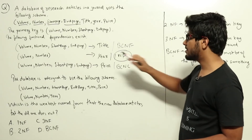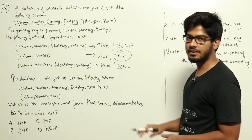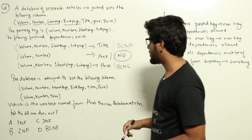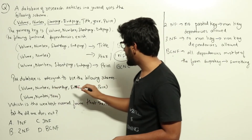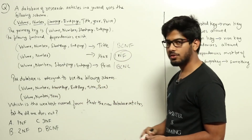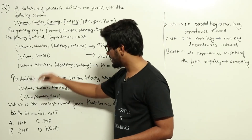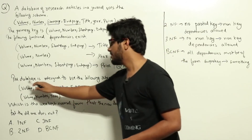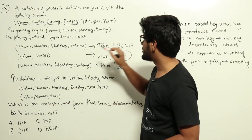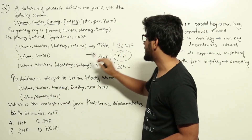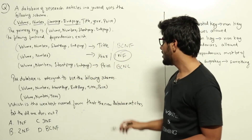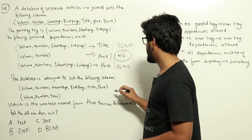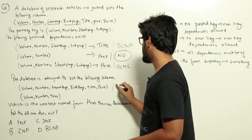Now for the redesigned database: the first table is Volume, Number, Start Page, End Page, Title, Price. The primary key Volume, Number, Start Page, End Page is present in this table. The functional dependencies Volume, Number, Start Page, End Page → Title and Volume, Number, Start Page, End Page → Price both exist in this schema and are of the form primary key to something, so this schema satisfies BCNF.